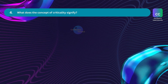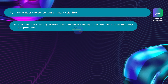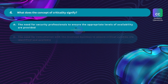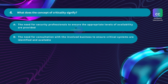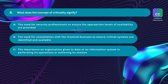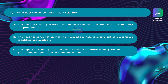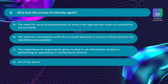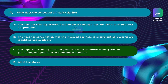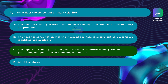Question number four: What does the concept of criticality signify? Option A: the need for security professionals to ensure appropriate levels of availability are provided. Option B: the need for consultation with the involved business to ensure critical systems are identified and available. Option C: the importance an organization gives to data or an information system in performing its operations or achieving its mission. Option D: all of the above. The correct answer is Option C.